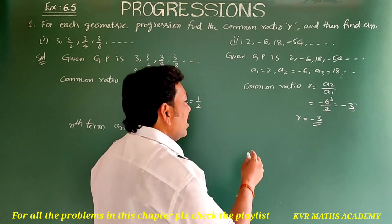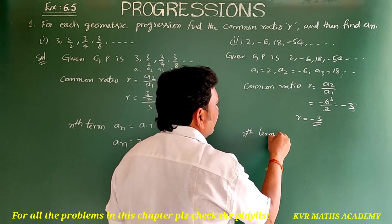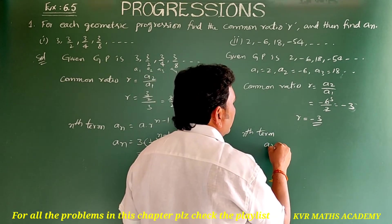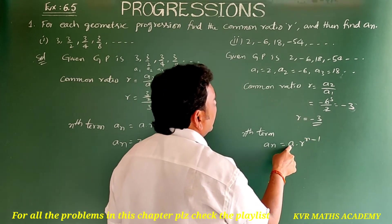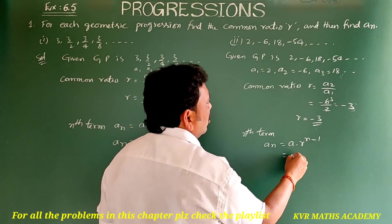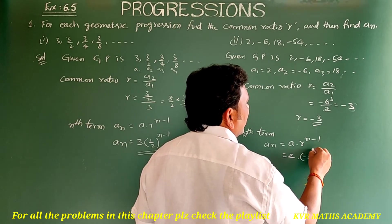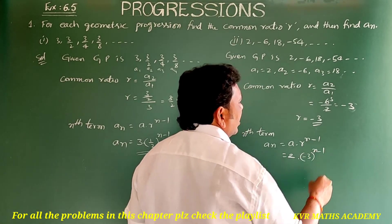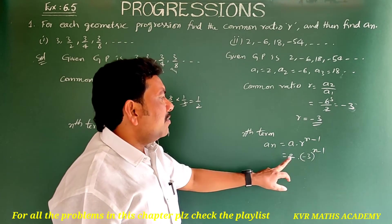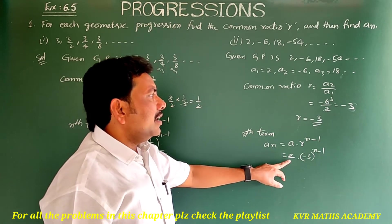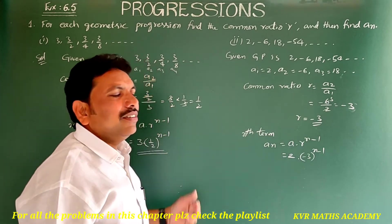Now the nth term: an = a × r^(n−1). Here a is 2 and r is -3, so an = 2 × (-3)^(n−1). This is the nth term of the given GP. Have you understood clearly? Note it down.